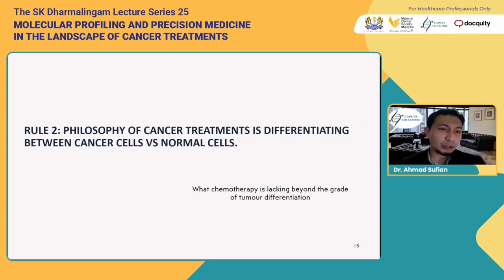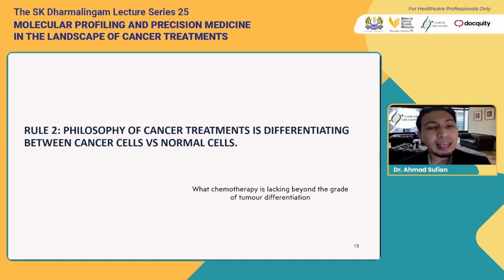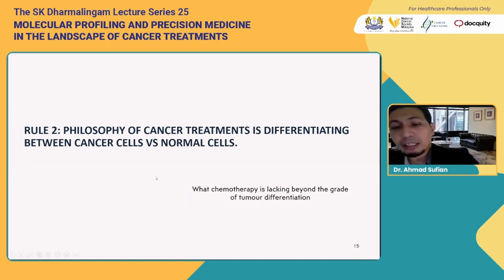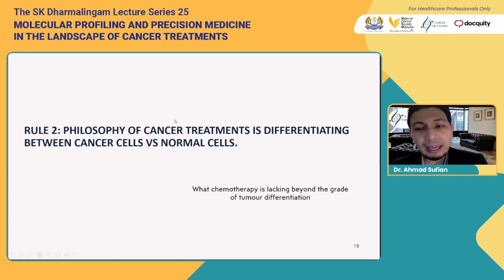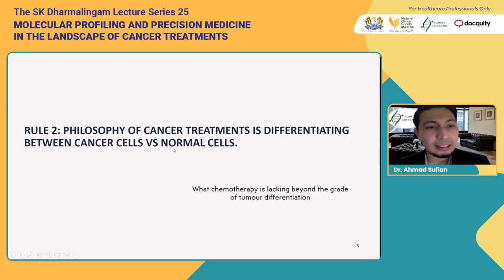That leads to rule number two: the philosophy of cancer treatments is differentiating between cancer cells versus normal cells. This is what chemotherapy is lacking, beyond the grade of tumor differentiation. Poorly differentiated cancer would respond much better to chemotherapy than well-differentiated cancer, but beyond that, there's not much differentiation in terms of chemotherapy effects on normal cells versus cancer cells.